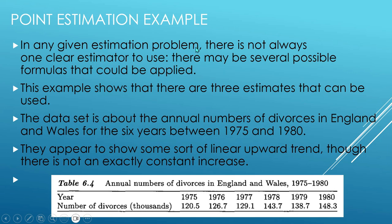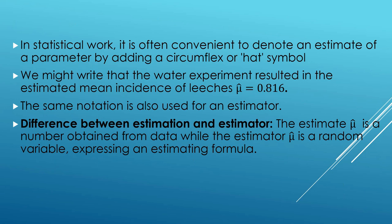What is the difference between an estimate and an estimator? The estimate μ̂ is a number obtained from data, while the estimator μ̂ is a random variable expressing an estimating formula. In any given estimation problem, there is not always one clear estimator to use — there may be several possible formulas that could be applied.